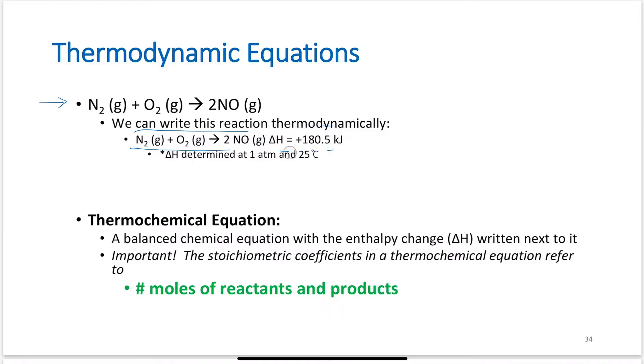Delta H, unless otherwise specified, is determined at 1 atmosphere and 25 degrees C, and the values in the back of your book are determined at 1 atmosphere and 25 degrees C. So if you're looking for these values, you're doing example problems, there's an appendix in your book that has all of these listed. But this is how we write a thermochemical equation.